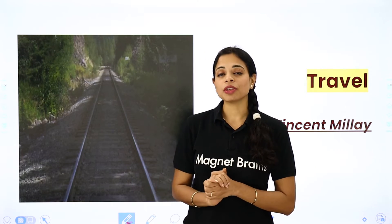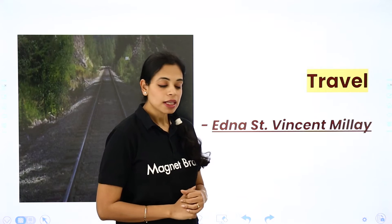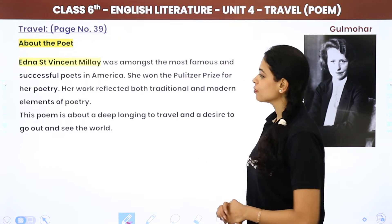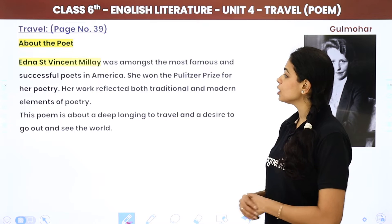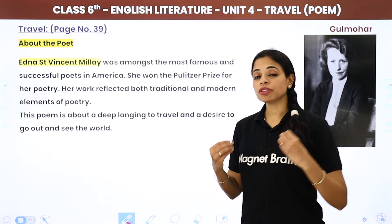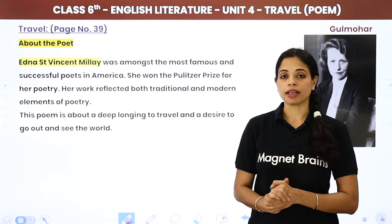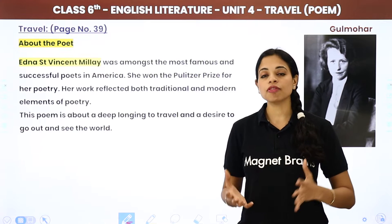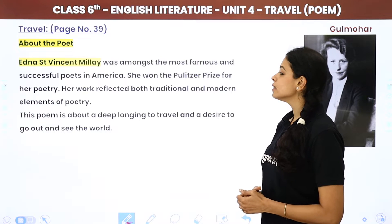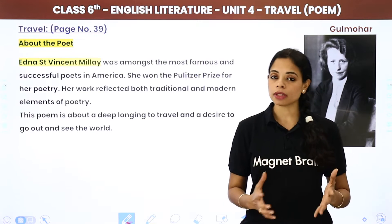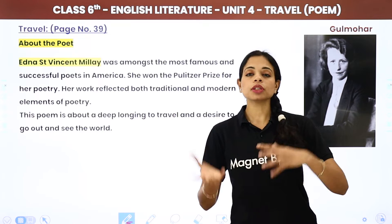Now we will start by knowing our poet. The name of the poet is Edna St. Vincent Millay. She was amongst the most famous and successful poetesses in America. She won the Pulitzer Prize for her poetry — the Pulitzer Prize is a very renowned prize in the field of poetry. Her work reflected both traditional and modern elements of poetry.